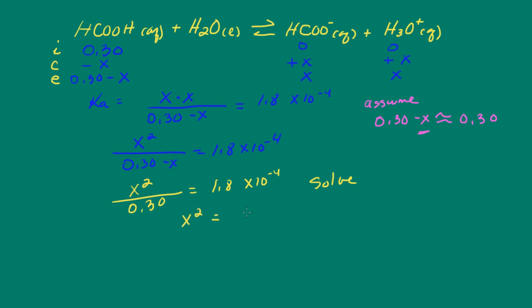And let's see, let's get the X squared by itself. We're going to have 0.3 times 1.8 times 10 to the negative 4. And what I can do here is take the square root of both sides.